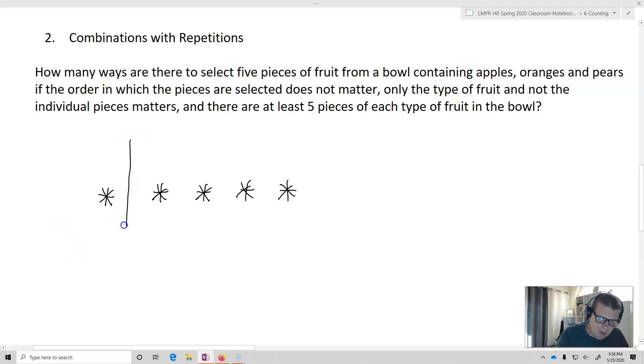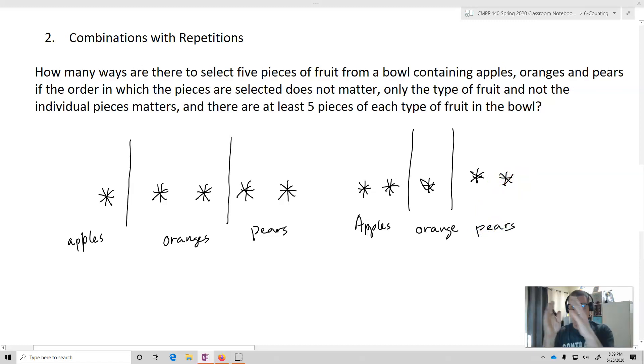For example, I imagine that I have a bar right here and this makes apples. So I'll have in this case one apple, and then I'll have another bar here and that'll be oranges, and I'll have another bar here that's pears. If I just moved my two bars, I get another ordering. I can imagine I have two apples now, one orange, and two pears. That's a different ordering.